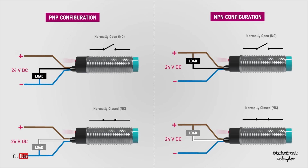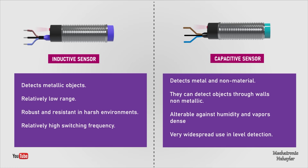Capacitive sensors, just like inductive sensors, are also available in many different configurations. Among them, they can be normally open or normally closed, PNP or NPN configuration, and there are also shielded and unshielded sensors. Let's look at the features, similarities, and differences between these two types of sensors.